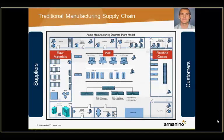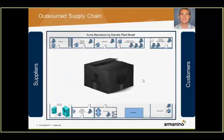In a traditional manufacturing supply chain, you are accustomed to being able to track your raw materials, your production work in process, as well as your finished goods within the four walls of your business environment. But when you move to more of an outsourced model, that becomes what's often referred to as a black box — there's just a lack of visibility into what's going on outside of your four walls.